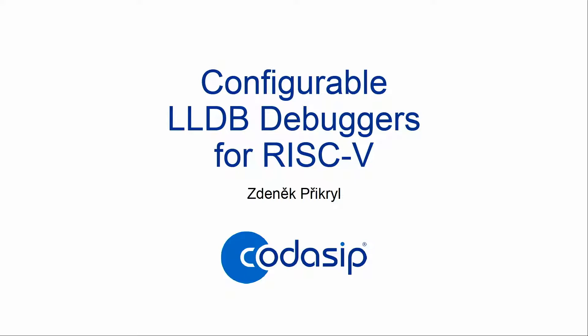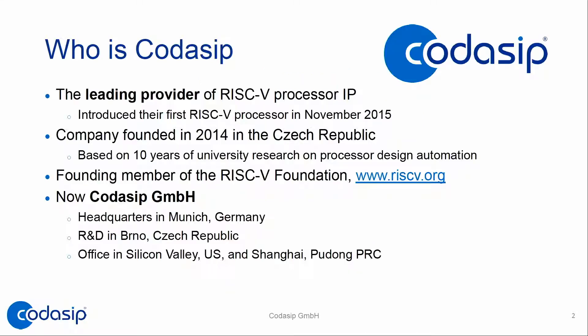Since we are in the commercial offering, let me go over just a few slides about who we are, what we do, which products we have. We are a provider of RISC-V compliant IP cores — we have a family of them. We are a founding member of the RISC-V foundation, joining in 2015. The company was founded in the Czech Republic, based on more than 10 years of research.